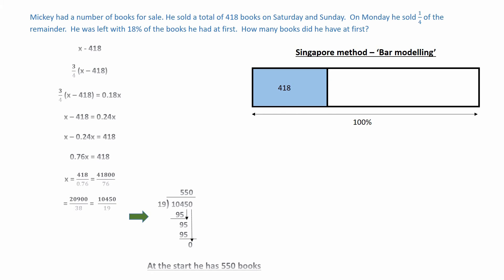A quarter of the remainder are sold on Monday. Divide this area into quarters. Shade one quarter and label the amount remaining as 18%. Since three quarters is equal to 18%, one quarter must equal 6%. Adding the 6 and 18 and subtracting the result from 100 gives 76% equal to 418 books.